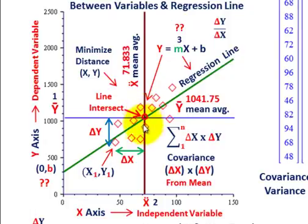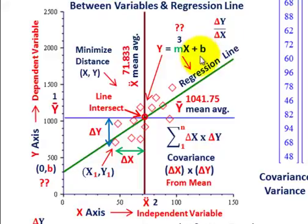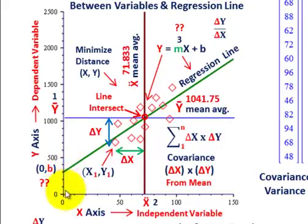We need to know the average y's and average x values, and knowing that we can determine our regression line. The regression line is y = m times x plus b, where m is the slope and b is the y-intercept — the value of y when x equals 0. We can determine the y-intercept knowing our covariance.